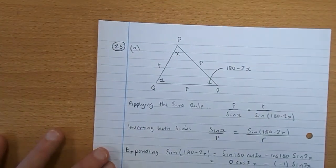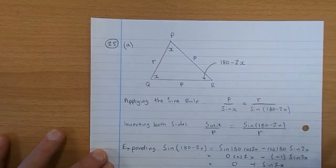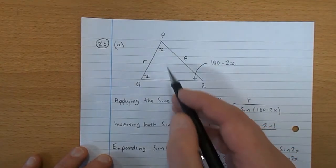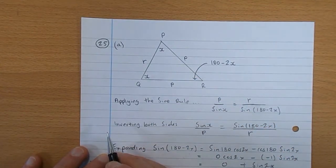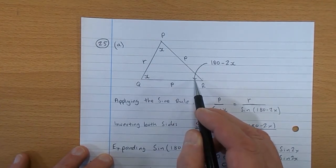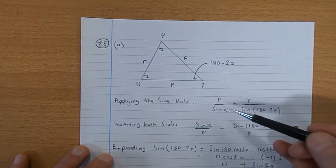There's the triangle again written out with the changes I put on it. There's P and there's X. Now, applying the sine rule to this, P over sine X is R over sine. Now, that one there, that angle there, is 180 degrees take away 2X. So that's an algebra there.